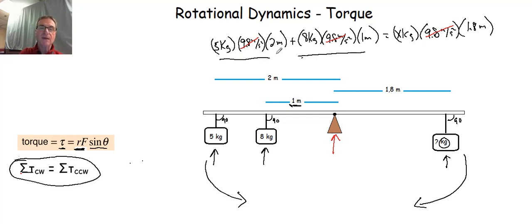Well, we have 5 times 2, we have 5 kilogram meters, if you will, plus 8 times 1, that's 8 kilogram meters, is equal to x kilogram times 1.8 meters. So we're getting somewhere. So if we add the 5 and the 8 on the left hand side,